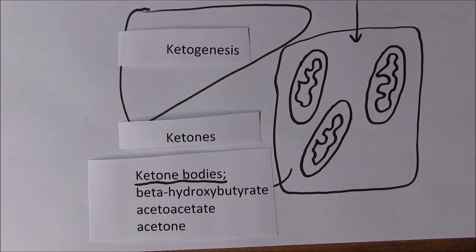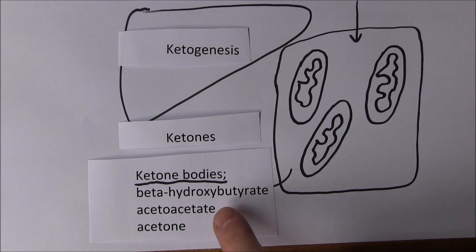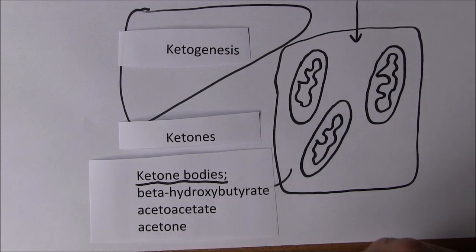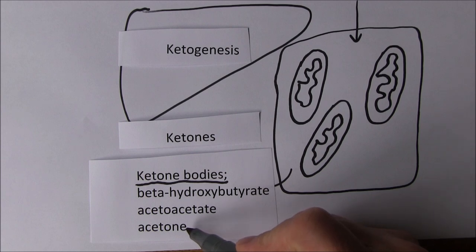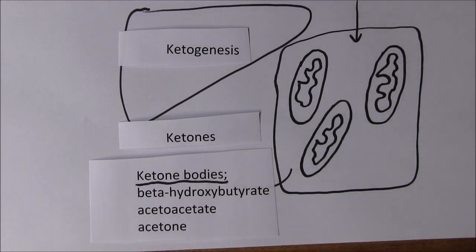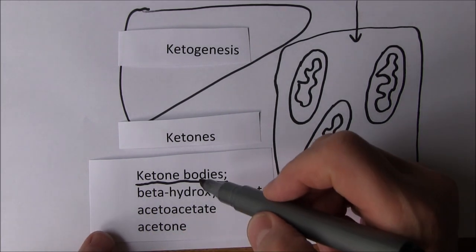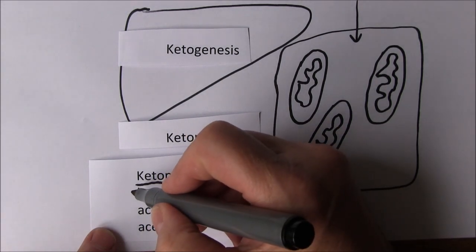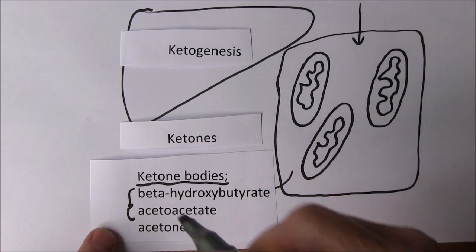So there's beta hydroxybutyrate. There's acetoacetate. And there's acetone. And of course the acetone is the one which is very volatile. And you can smell that on the breath of someone who's ketotic. So that ketotic smell you get is largely from the acetone. And the beta hydroxybutyrate and the acetoacetate, these are both acidic.